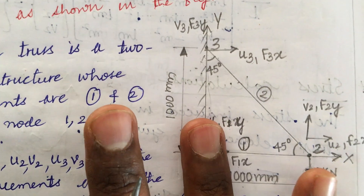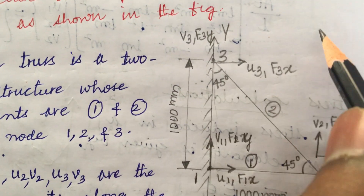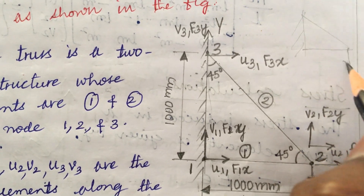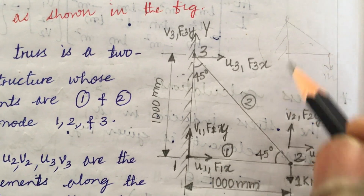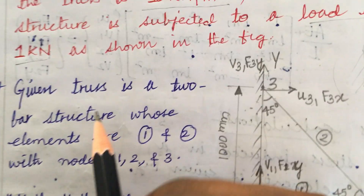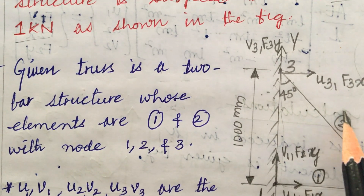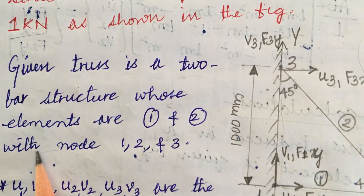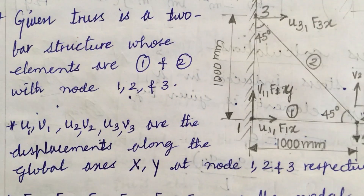Note that these forces would not be given directly — only the triangular cross section bar with certain forces will be given. You need to redraw and write down all these things yourself. The given truss is a 2-bar structure with elements 1 and 2 and nodes 1, 2, and 3.